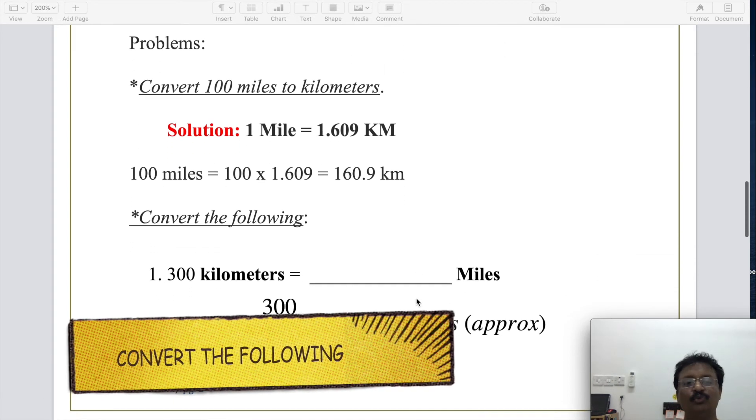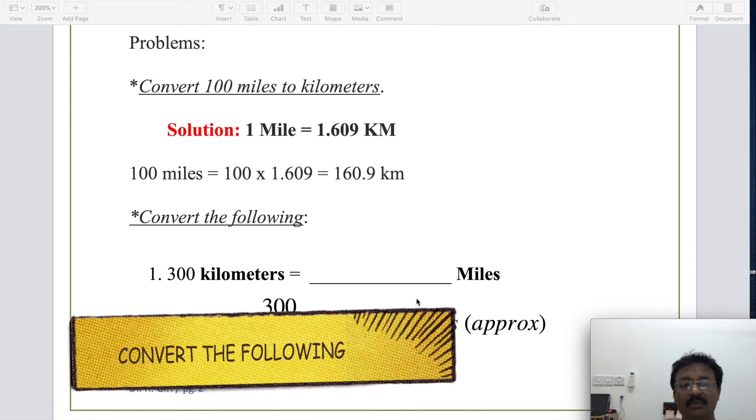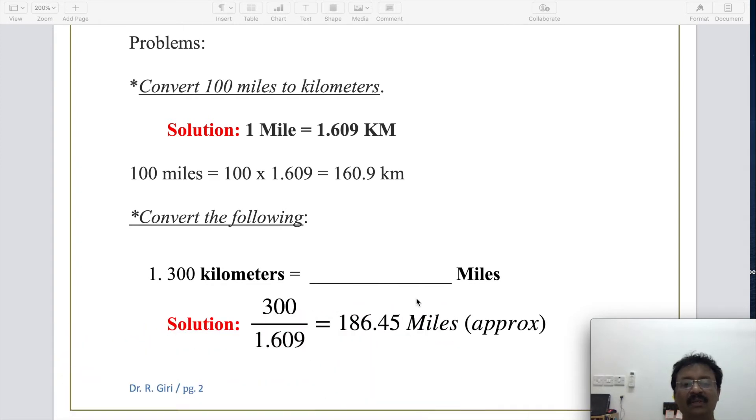Now how to convert 300 kilometers to miles. Kilometer is given, 300 divided by 1.609. So 300 divided by 1.609 is nothing but 186.45 miles approximately. The solution as a two decimal number, 186.45 miles approximately equals 300 kilometers.